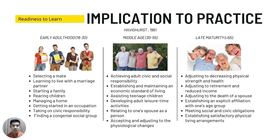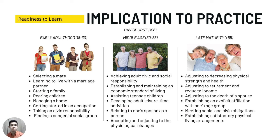In this slide, we are going to discuss the developmental tasks. You can see three differing developmental tasks among age groups: early adulthood, middle age, and late maturity, from Havighurst in 1961. For early adulthood, 18 to 30 years old, tasks include selecting a mate, learning to live with a marriage partner, and starting a family. For middle age, 30 to 55, tasks include achieving adult civic and social responsibility and establishing an economic standard of living. For late maturity, over 55, tasks include adjusting to decreasing physical strength and reduced income.